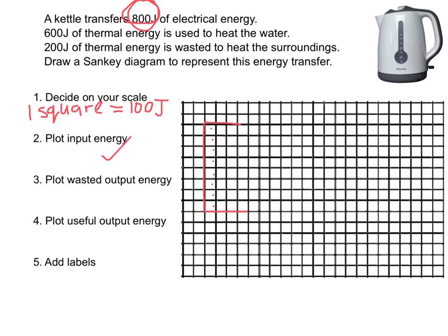Next, we're going to plot the wasted energy. The wasted energy here is 200 joules, and it's often easier to plot the wasted energy first. Remember that wasted energy needs to point downwards and represents 200 joules, which on our scale would be two squares. So let's count across: one, two squares there. So this would be part of our Sankey diagram there. Turn it into an arrow. So we've plotted the wasted energy outputs now.